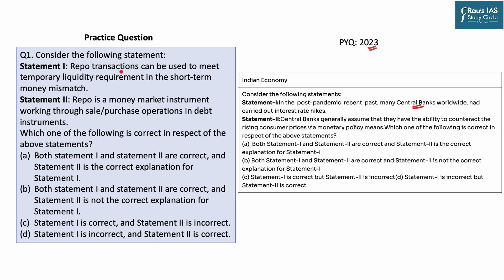Statement 1 says repo transactions can be used to meet temporary liquidity requirements in short-term money mismatch. This statement is correct, because repo transactions between the central bank and commercial banks take place for short-term money mismatch. Statement 2 says repo is a money market instrument working through sale and purchase of options in debt instruments, which include government securities. As repo is a short-term measure, it is part of the money market, so statement 2 is also correct.